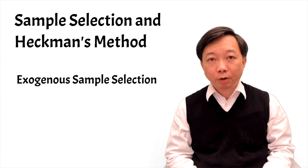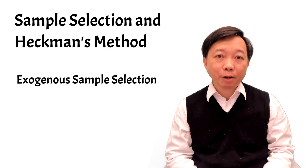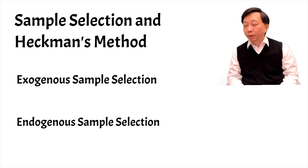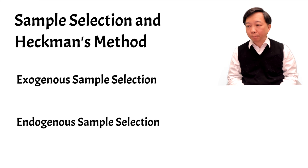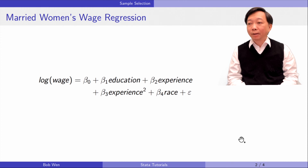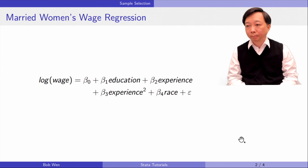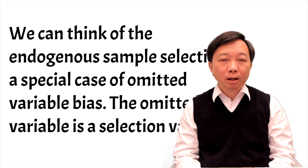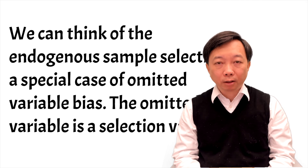The situation is very different when the selection is based on the outcome variable — it is usually an example of endogenous sample selection. We can see the women's wage equation as an example where the sample is based on the outcome variable wage, because only those who receive positive wage offers are in the sample. The name endogenous sample selection comes from the fact that the selection is based on some unobserved factors in the error term. We can think of endogenous sample selection as a special case of omitted variable bias, where the omitted variable is a selection variable.